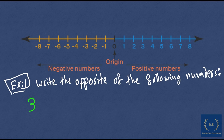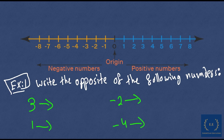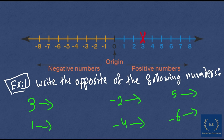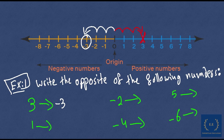Example number 1: write down the opposite of the following numbers. We have 3 — what is the opposite of 3? We have 1 — what is the opposite of 1? We have minus 2 — what is the opposite of minus 2? We have minus 4 — what is the opposite of minus 4? We have 5 — what is the opposite of 5? And we have minus 6 — what is the opposite of minus 6? Let's start with the first one. I'm going to locate 3: it is 3 places to the right of the origin. The opposite of 3 is 3 places to the left of the origin, so the answer is minus 3. Similarly, the opposite of 1 is minus 1.